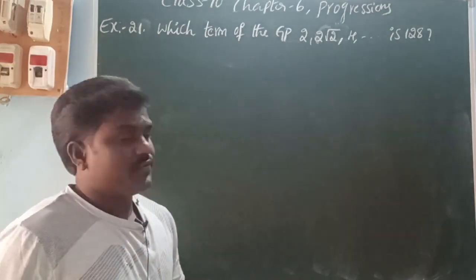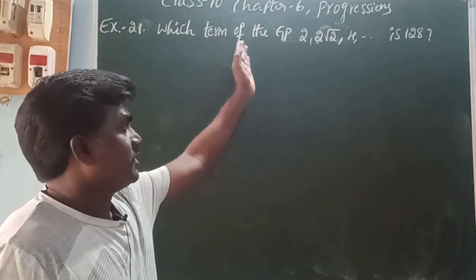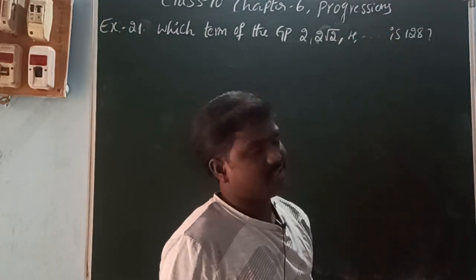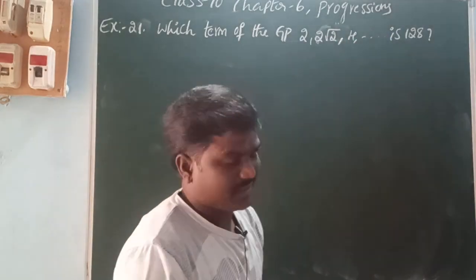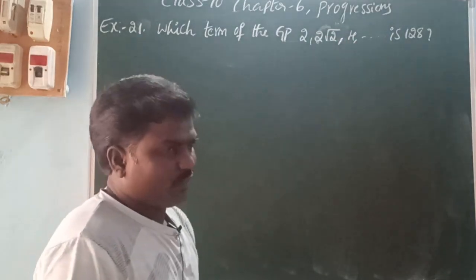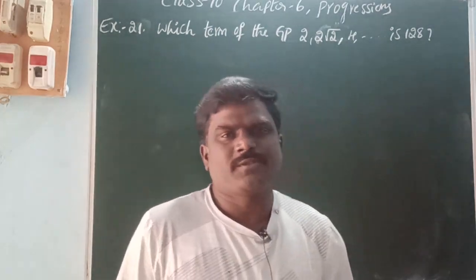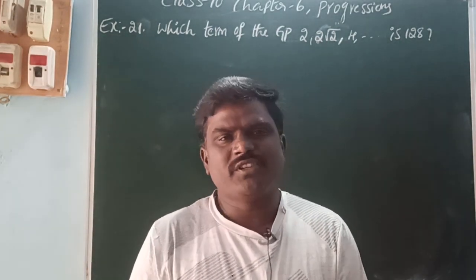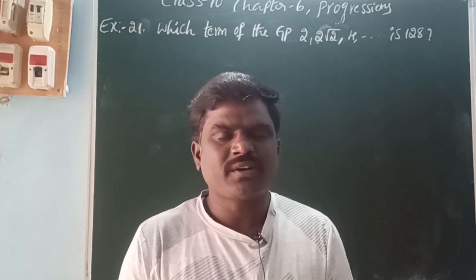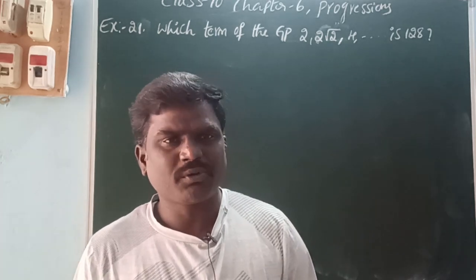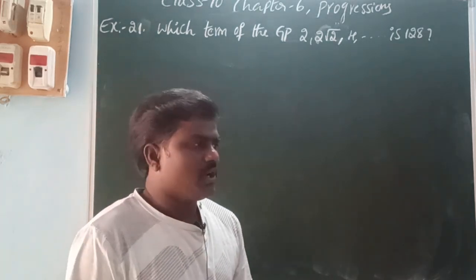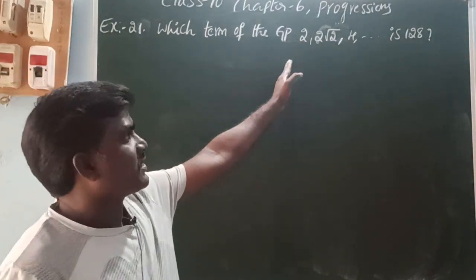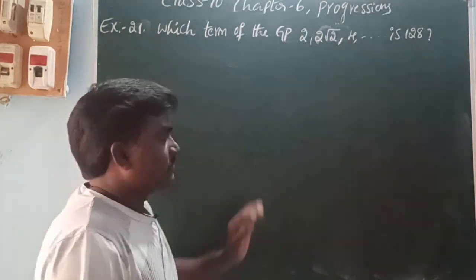Next: which term of the GP 2, 2√2, 4, and so on is 128? We need to find which term equals 128. We can use the nth term formula of the GP: a·r^(n-1). First, find the common ratio and first term.